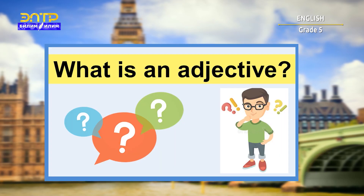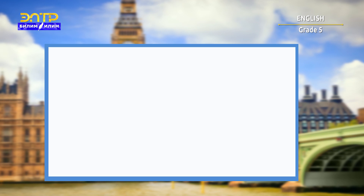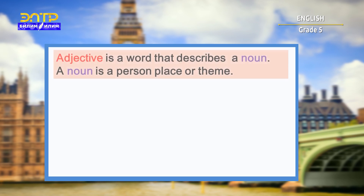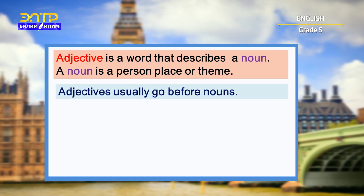But first let's revise what is an adjective. An adjective is a word that describes a noun. A noun is a person, place, or thing.